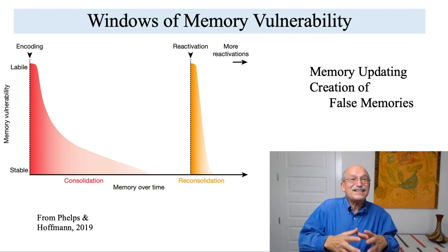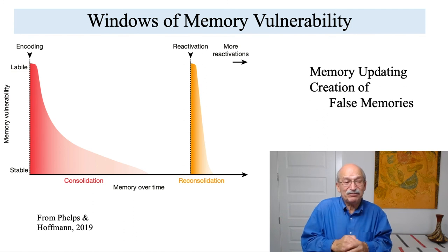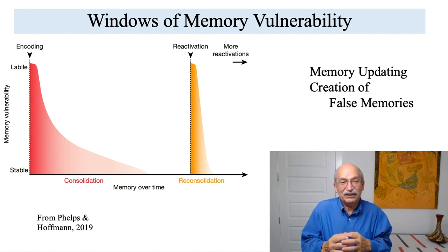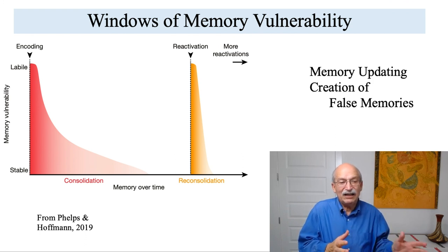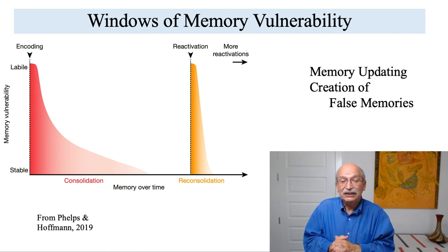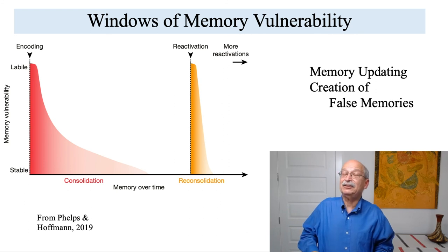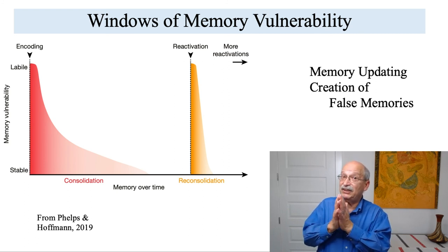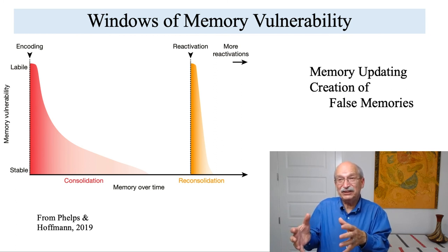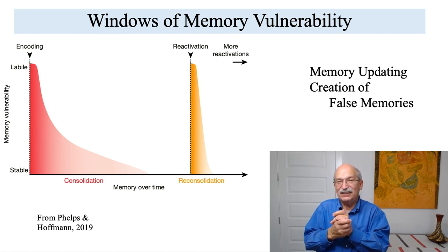The greatest susceptibility to modification, of course, occurs during original learning — memory is extremely labile. In the original encoding, that's the figure on the left side, the red curve, and that's the original phase of consolidation. But then the memory is reactivated, which returns the memory to a flexible, malleable state, and then it's subject to reconsolidation. The reconsolidation window — the period over which reconsolidation occurs — is shorter and smaller than the original consolidation window.